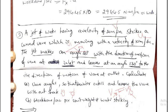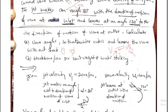I will solve one more problem. A jet of water having a velocity of 20 meter per second, V, strikes a curved vane which is moving with a velocity of 10 meter per second, U. The jet makes an angle of 20 degree with the direction of motion of the vane at inlet — that is alpha equals 20 degree with respect to the horizontal. And the jet leaves at an angle 130 degree in the direction of motion at outlet. Calculate vane angles theta and phi so that water enters and leaves the vane without shock, meaning Vr1 equals Vr2.